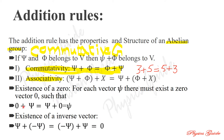Such that zero plus psi equals psi plus zero equals psi. If we add the zero vector to psi, we get psi as the answer. Also, the existence of an inverse vector: psi plus its inverse (minus psi) should equal zero. You can interchange these vectors and still get zero. This shows the existence of both the inverse vector and the zero vector.